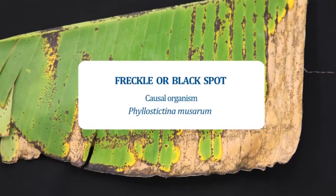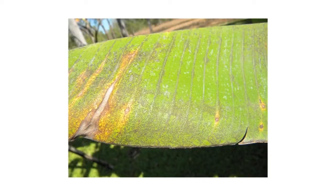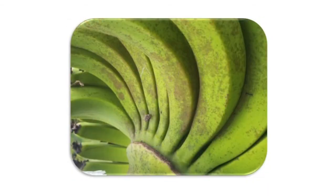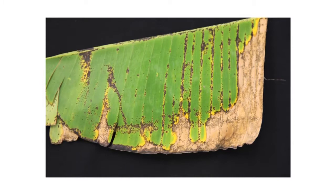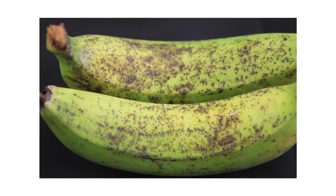The next disease is Freckle or Black Spot, caused by Phyllosticta musarum. Minor raised dark brown spots with black dots in the center appear on leaves and fruits. The most characteristic symptom is a sandpaper feel to the leaf and fruit. Both the large and small spots are dark brown to black in color. On the fruits, the pathogen is confined to the skin. Severely affected leaves turn yellow, wither and die prematurely.